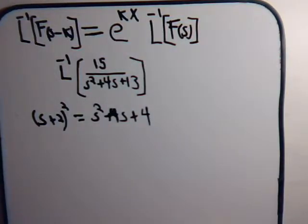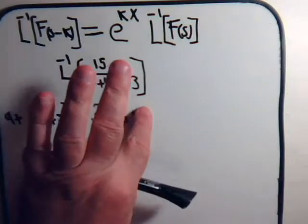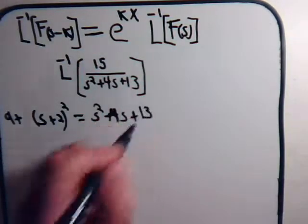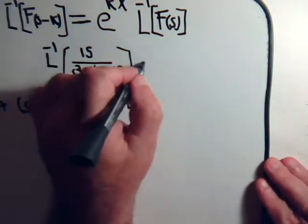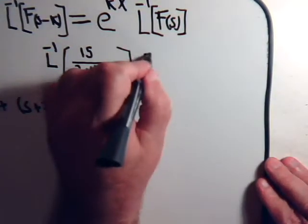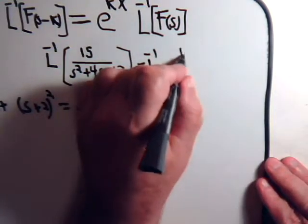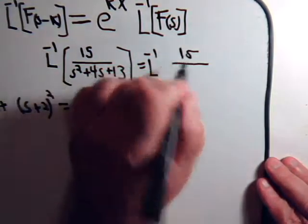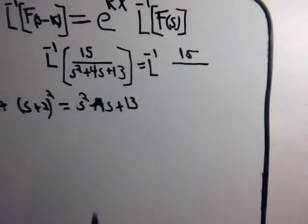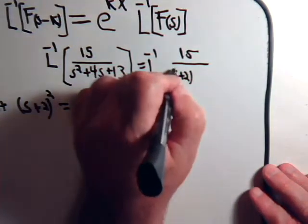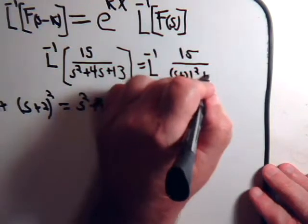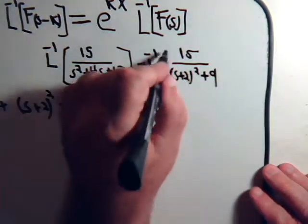And that gives us s squared plus 4s and 2 squared is 4. Well if we added 9 to this, then that would give us this. So we can rewrite this as inverse Laplace transform of 15 divided by s plus 2 quantity squared plus 9.